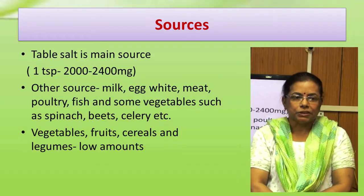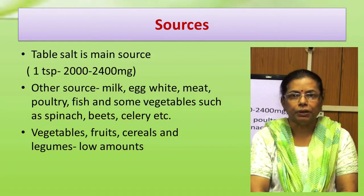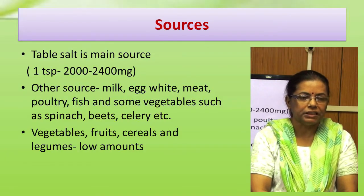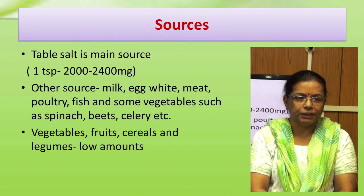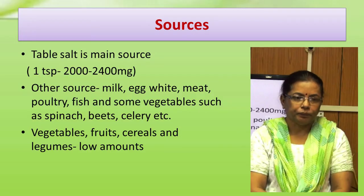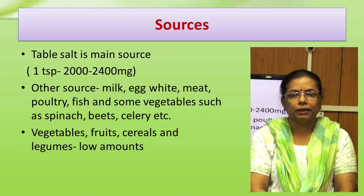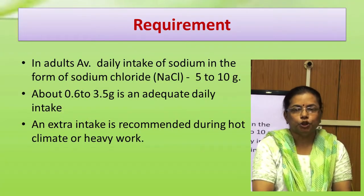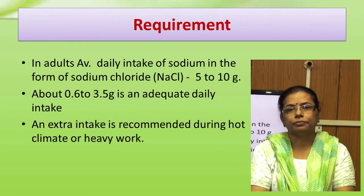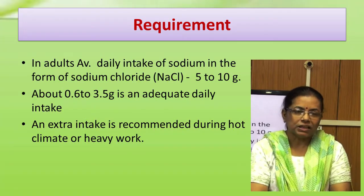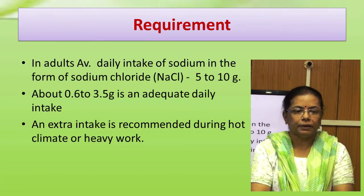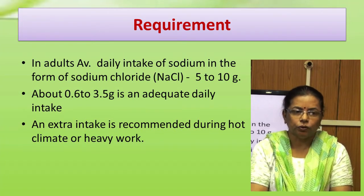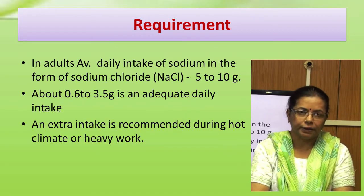Sodium chloride is the best source of sodium in our diet. Other sources include milk, egg white, meat, poultry, fish, and some vegetables such as spinach, beets, and celery. Vegetables, fruits, cereals, and legumes contain low amounts of sodium. On average we consume 5–10 g of sodium chloride per day; about 0.6–3.5 g is an adequate daily intake. Extra intake is recommended during hot climates or after heavy work.